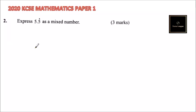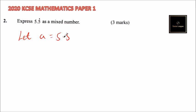Question number 2: express 5.5 recurring decimal as a mixed fraction. To answer this question, we say that A is equal to 5.555 continuous.